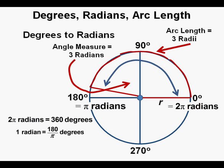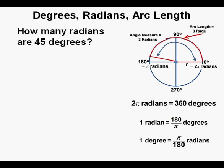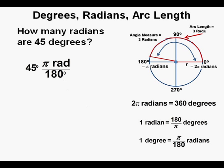Using the relation between degrees and radians, we can write: two pi radians equals 360 degrees. Dividing both sides by two pi gives us one radian equals 180 degrees divided by pi. We can also write this as one degree equals pi over 180 radians. Now let's work some conversion problems. How many radians are there in 45 degrees?